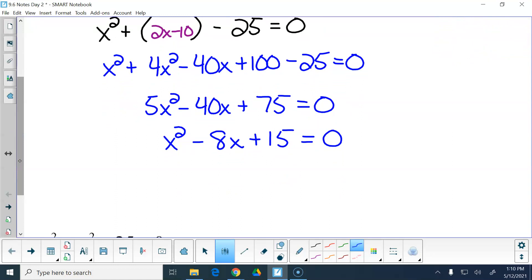Two numbers that multiply together to be positive 15 and add together to be negative 8. Negative 3 and negative 5. Then this becomes 3, and this becomes 5.